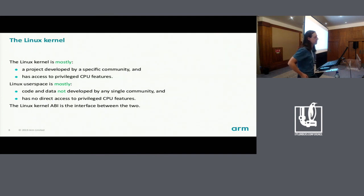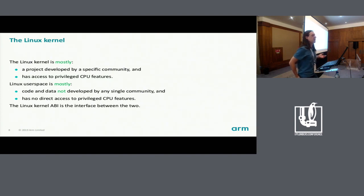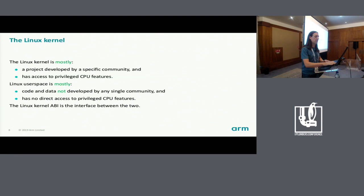In Linux land, what tends to happen in practice is we have the Linux kernel project and we develop the blob that runs privileged, and that blob has access to the privileged features of the CPU. User space is mostly the other stuff — it's not developed specifically by this community and doesn't have access to privileged CPU features. The ABI is the interface that those two things use to talk to each other. Where I say kernel in this talk, I'll mostly mean the thing that runs privileged.